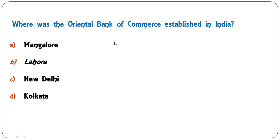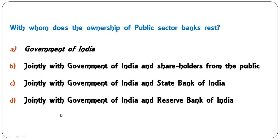Where was the Oriental Bank of Commerce established in India? Options are Mangalore, Lahore, New Delhi, or Kolkata. The Oriental Bank of Commerce was established in 1943 in pre-independent India in Lahore, so B is the correct answer. After the partition, the head office of Oriental Bank shifted to Delhi.